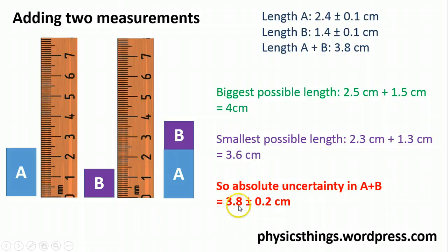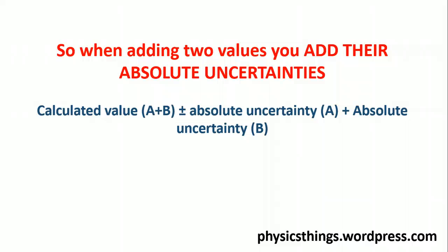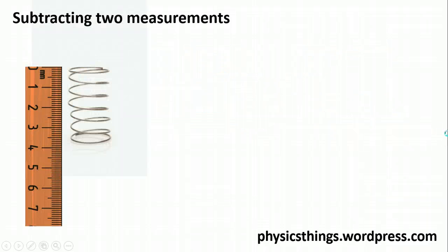So my absolute uncertainty when adding A to B gives me 3.8 ± 0.2 cm. The quick way to think about it: when you add two values, you add their absolute uncertainties. You take your calculated value (A + B), put your ± sign, and then add the absolute uncertainty in A to the absolute uncertainty in B.